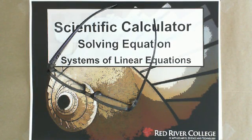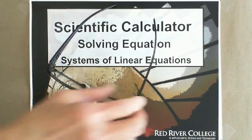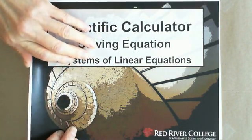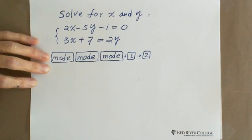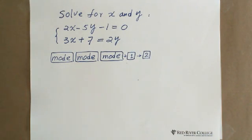Hi, welcome to Wiseguys, solving equations, system of linear equations using scientific calculus. So let me show you two examples. First of all, solve for x and y: 2x minus 5y minus 1 equals 0, and 3x plus 7 equals 2y.